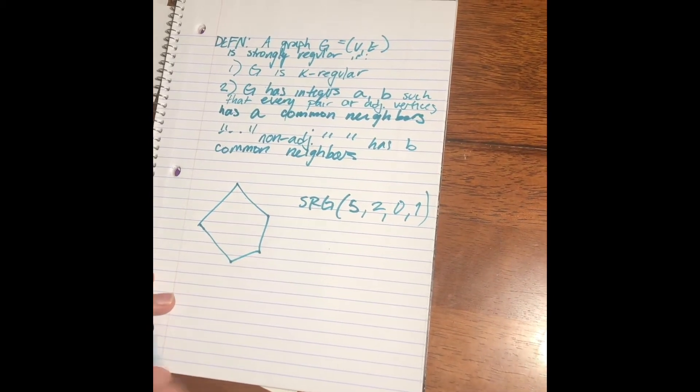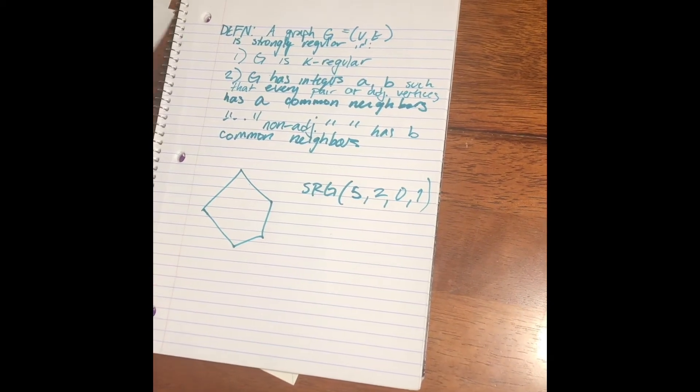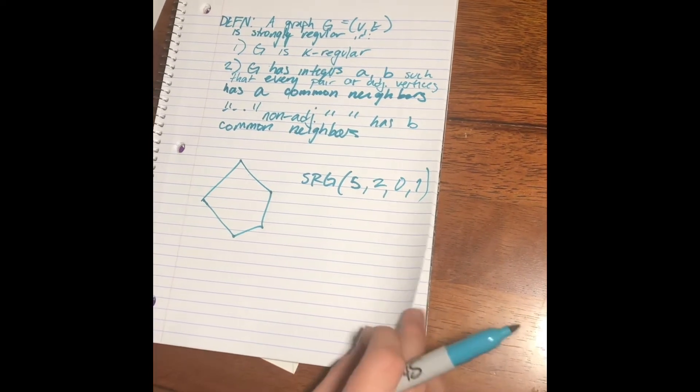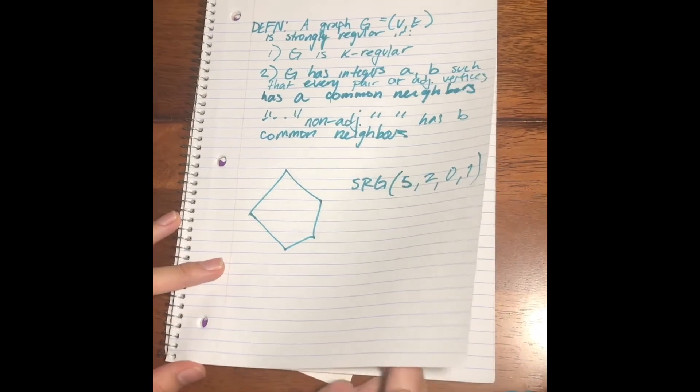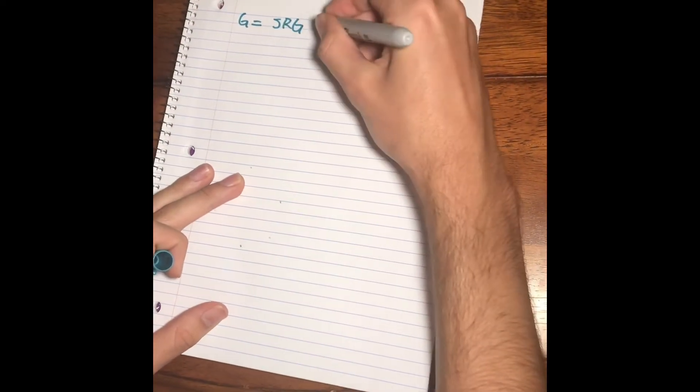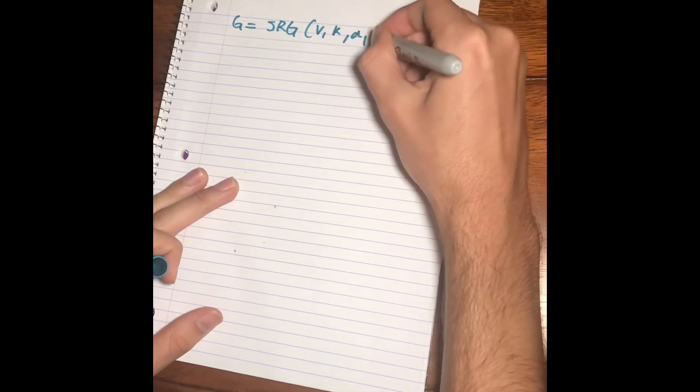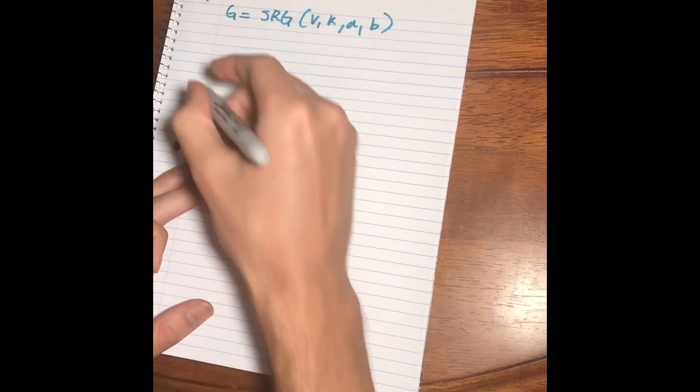Another interesting example is the Peterson graph. I won't draw that here, but that is also strongly regular. And now, let's just prove something quick, a pretty useful identity that relates to strongly regular graphs. And that is for any strongly regular graph denoted as follows.